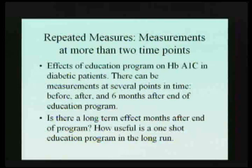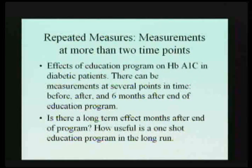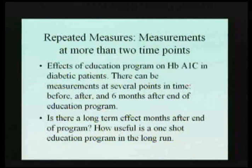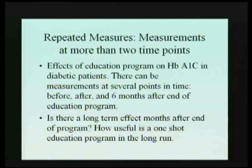Just as we can have repeated measures or a before-and-after design with t-tests, we can do the same with analysis of variance. Going back to the example of diabetic patients and the education program — a lot of interventions in complementary medicine work pretty well before and after, so you see a good response. But if you look at the response six months later, patients are often showing lower A1c between before and after.